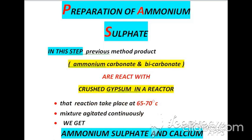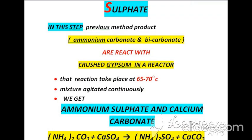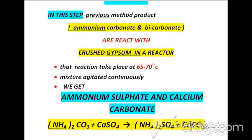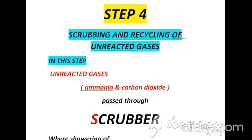According to the third step, which is preparation of ammonium sulphate, the products from the previous step — ammonium carbonate and ammonium bicarbonate — react with crushed gypsum in a reactor at around 65 to 70 degrees centigrade. The mixture is agitated continuously, and as a result we get ammonium sulphate and calcium carbonate.